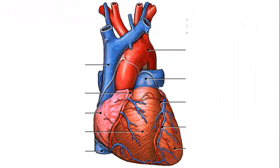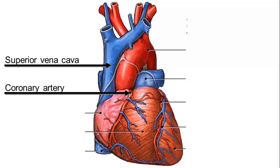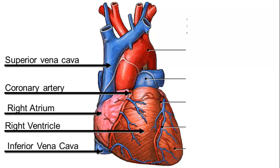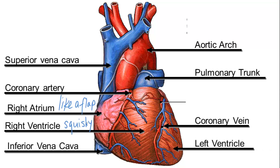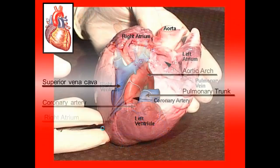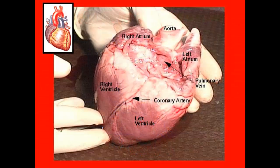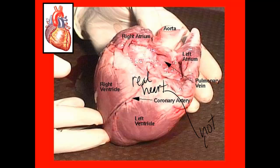Let's look at the outside of our heart and identify the parts: the superior vena cava, the coronary artery, the right atrium, the right ventricle, and the inferior vena cava. One thing to know about the atria is that when you look at a real heart, they're kind of like little flaps. The right ventricle compared to the left will be a lot more squishy, not as solid. Here we've got the aortic arch, the T-shaped pulmonary trunk, the coronary vein, and the left ventricle. On a real heart it's much harder to identify when it's not all color-coded, so you'll have to stick your fingers inside, figure out where the left ventricle is, and poke through all the tubes to figure out where they're going.